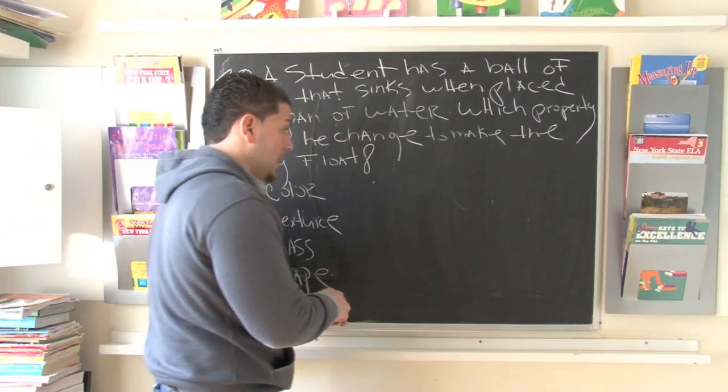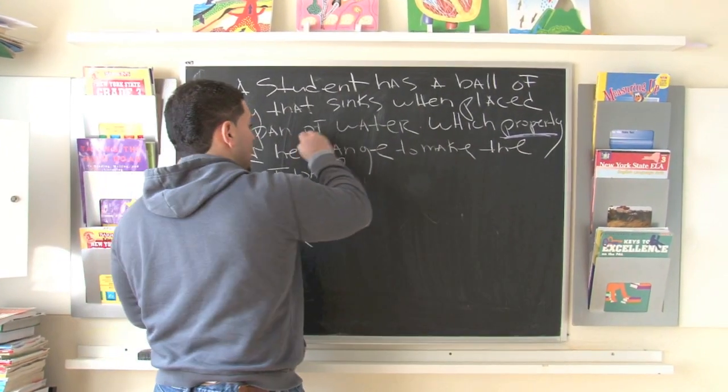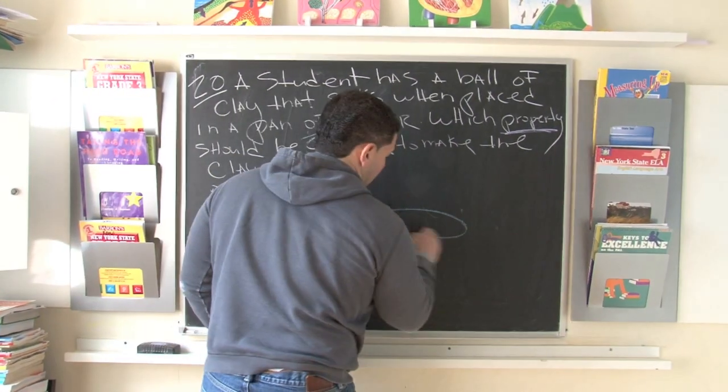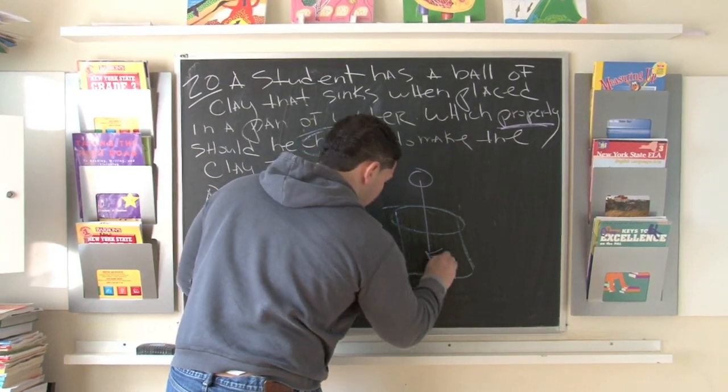Which property, and there goes the key word right there, which property should he change? We're looking to change to make the clay float. So let's think about that pan of water. Here, it goes like this. We have a ball, we drop it, it goes straight to the bottom.